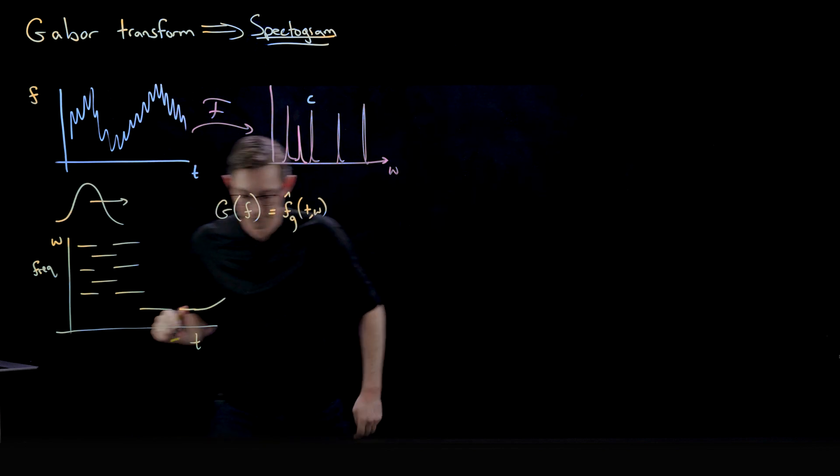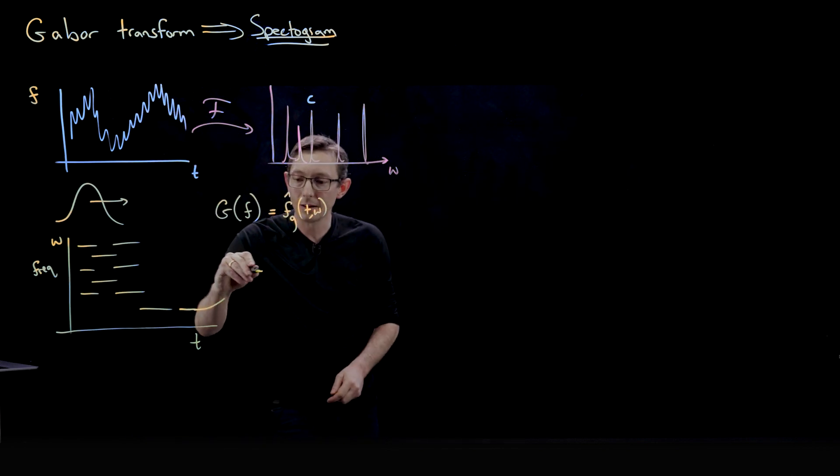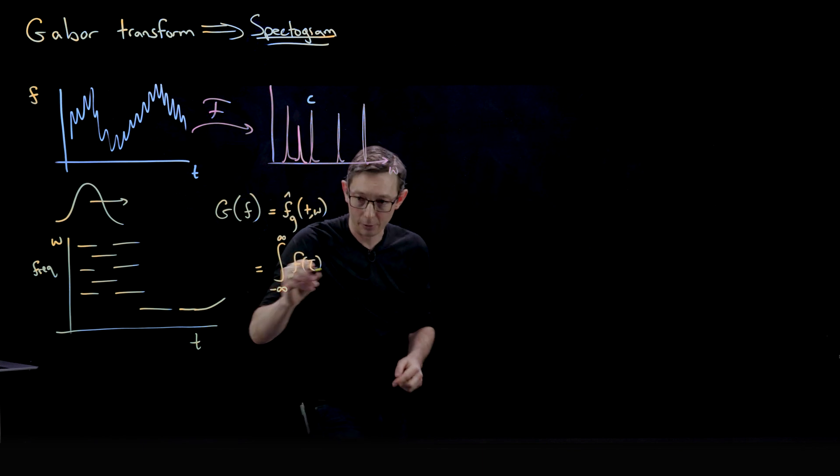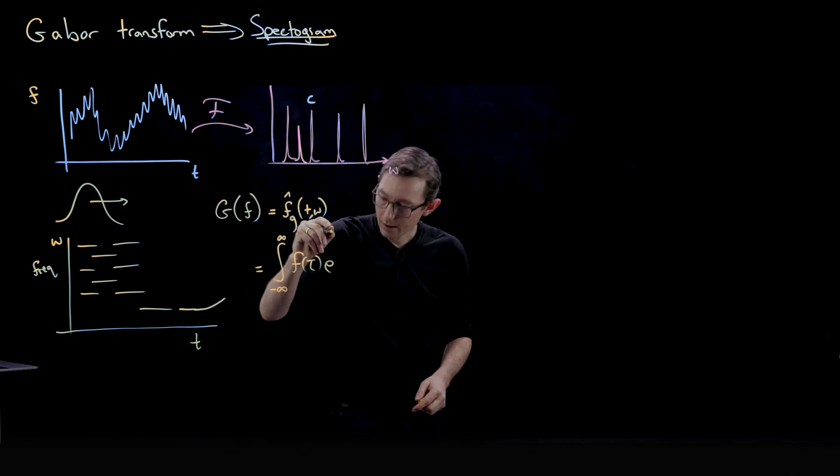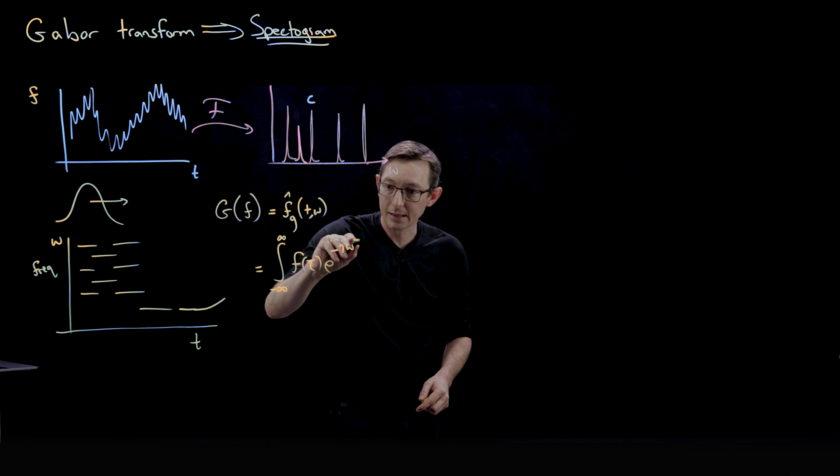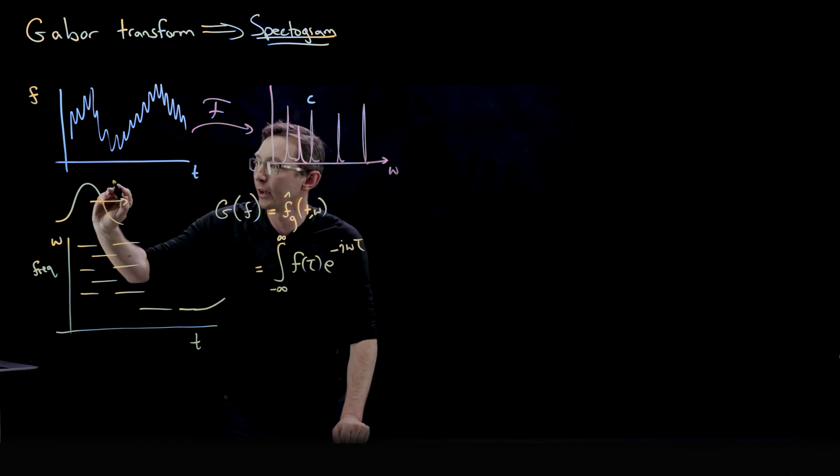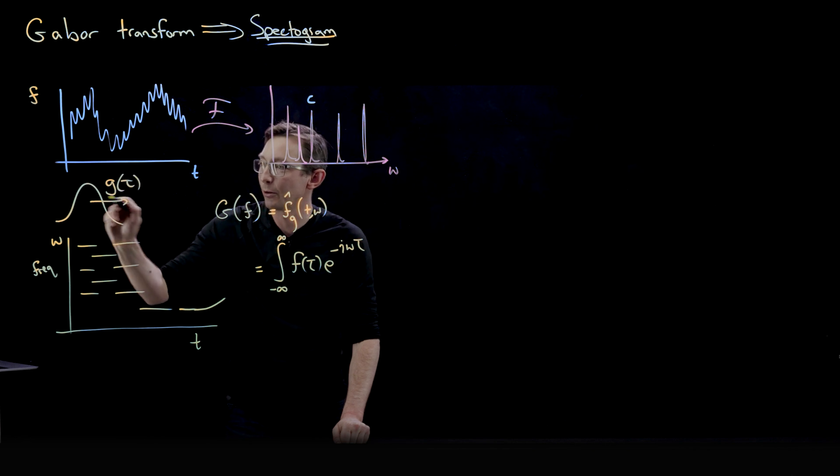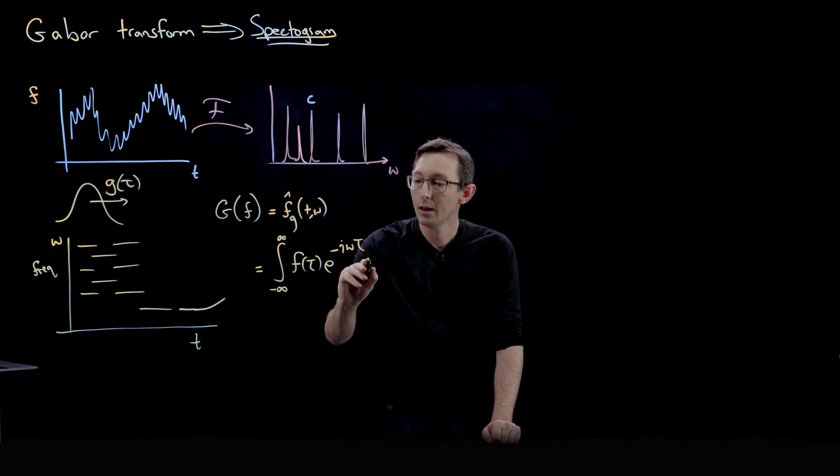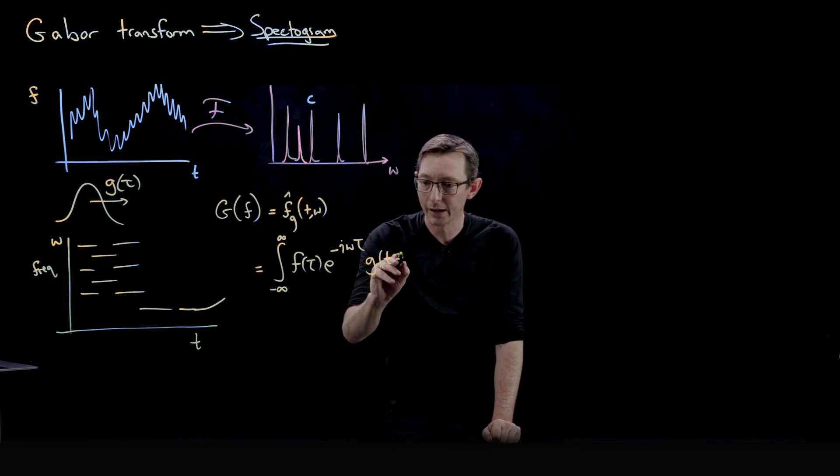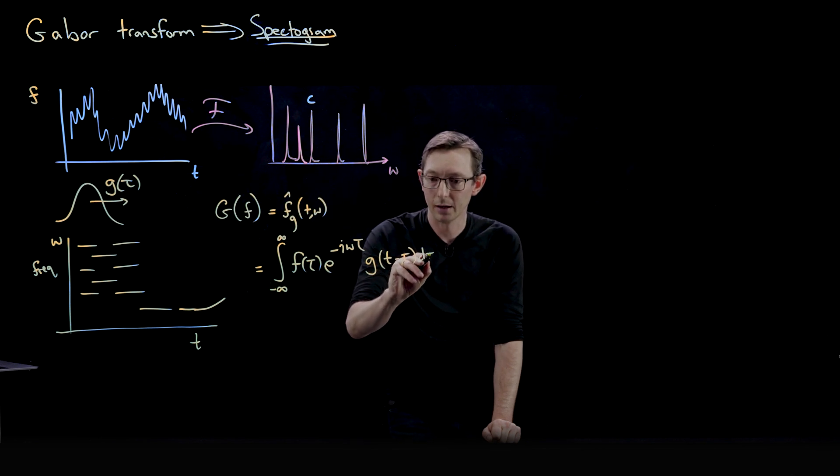And it's going to be given by basically the Fourier transform. So integral from negative infinity to infinity of f of tau e to the minus i omega tau. But now I'm going to multiply it by this little Gaussian Gabor window here, this little Gaussian function g of tau. I'm going to multiply it by g of t minus tau, d tau.